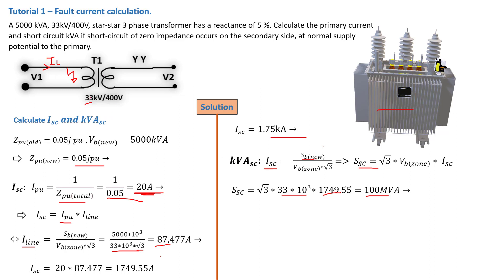Substituting all values, we find a short circuit MVA of 100 MVA — 100 megavolt-amperes. Just imagine: this is only a 5 MVA transformer, yet it can potentially develop 100 MVA of short circuit power at its terminals. You therefore need a capable circuit breaker to handle that level of power.